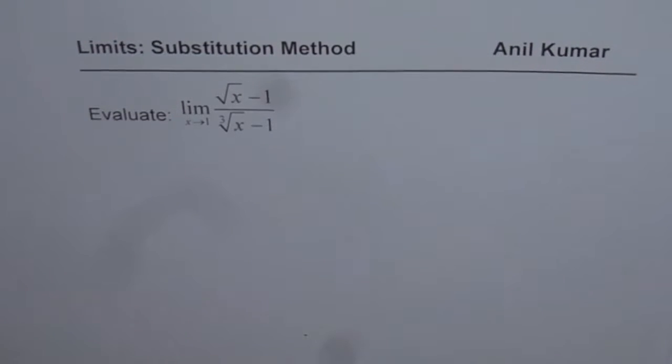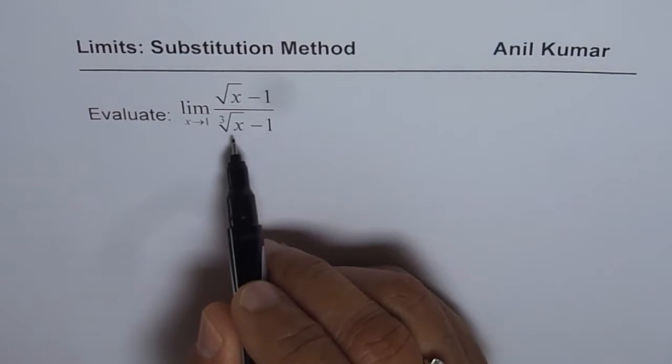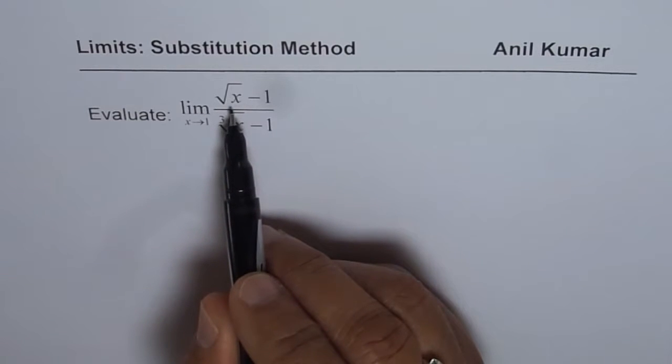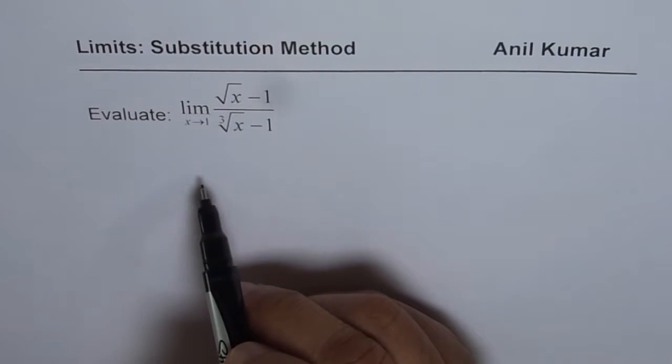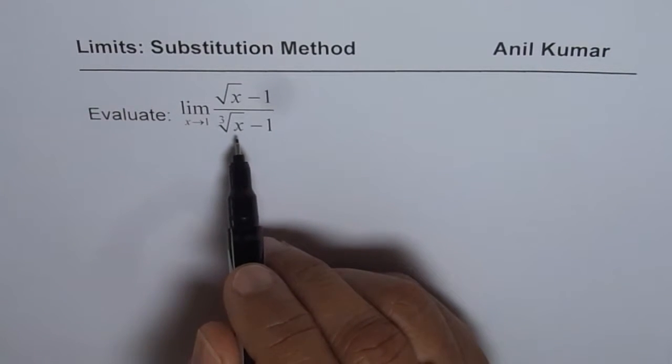The best method to do this is probably substitution. So we'll substitute cube root of x with some variable. Now if I substitute cube root of x with some variable, it may not really help us since we have square root here in the numerator.